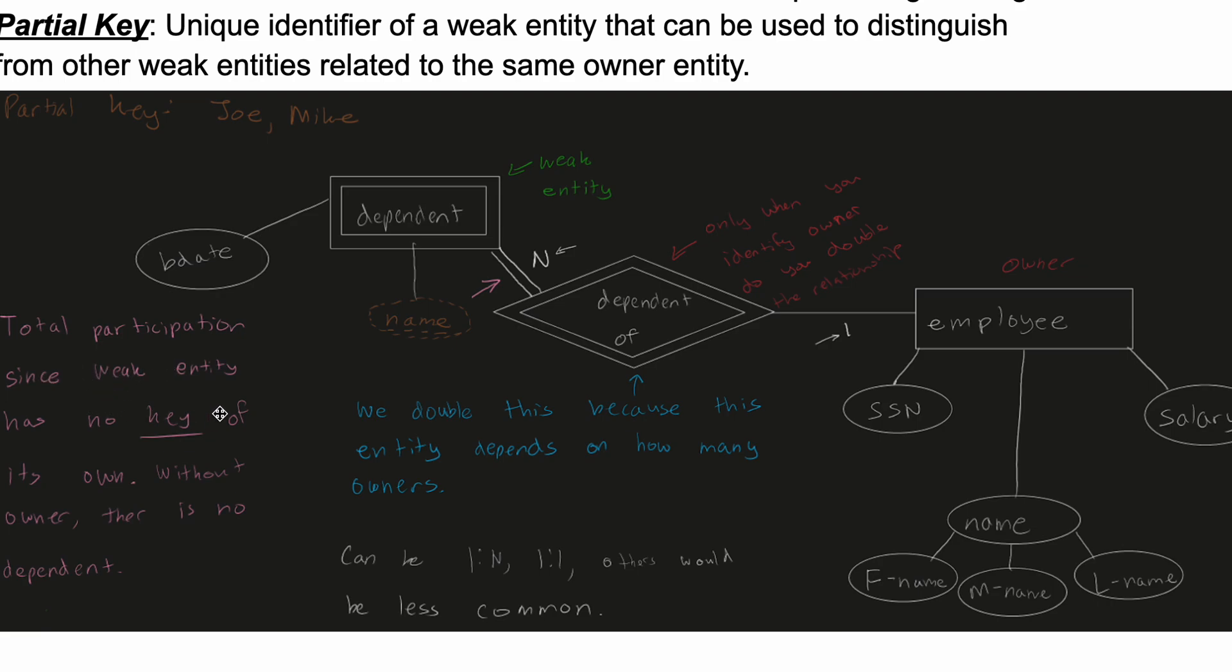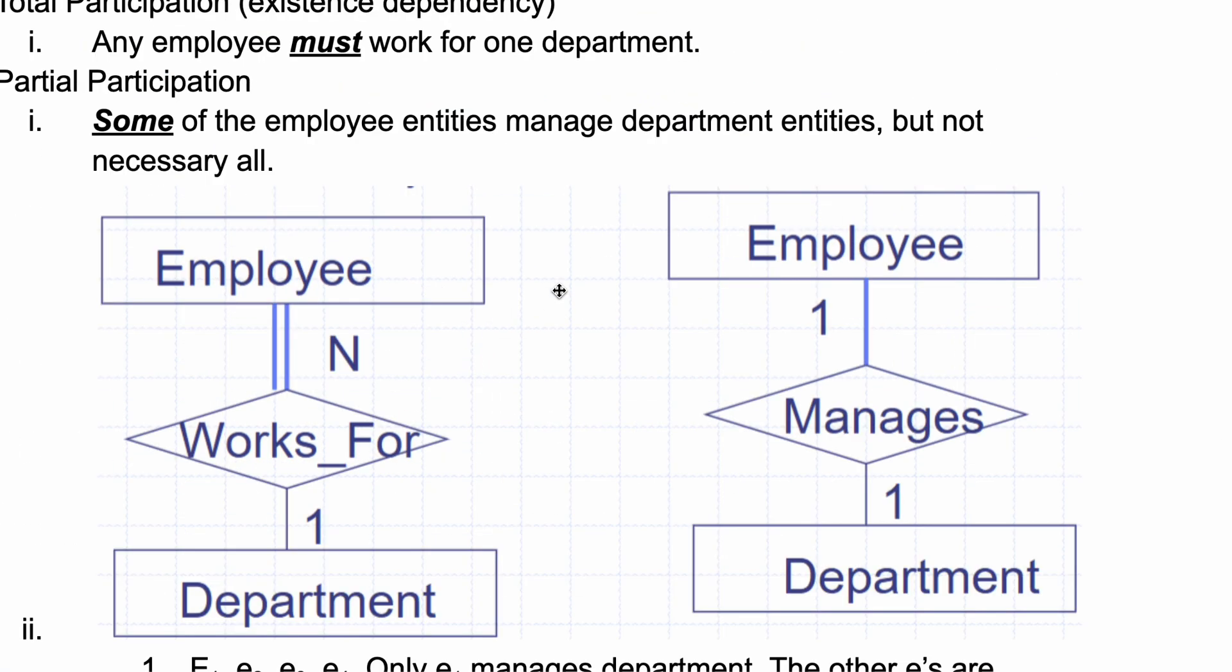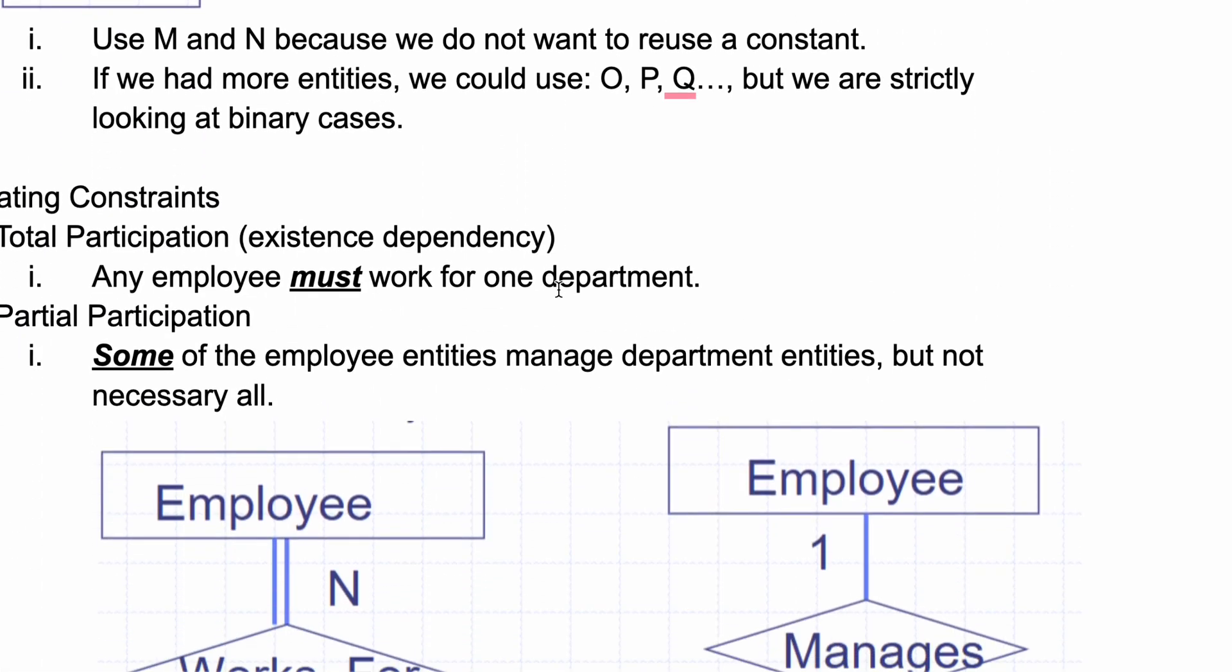Without the owner, there is no dependent. So that means we have to have these two lines here, because remember, total participation is represented with two lines, and we've gone over this previously.